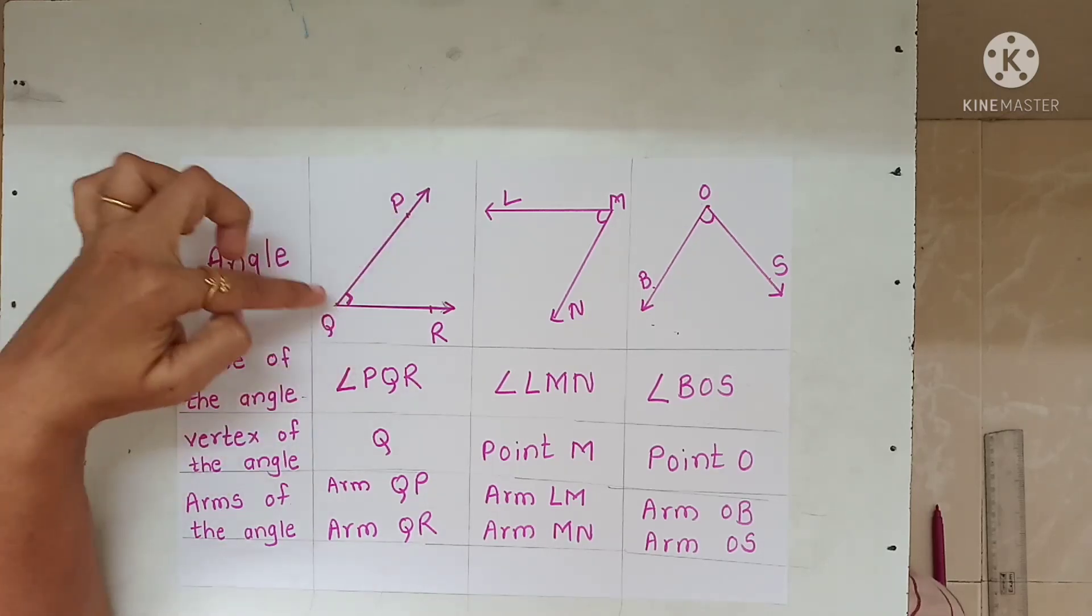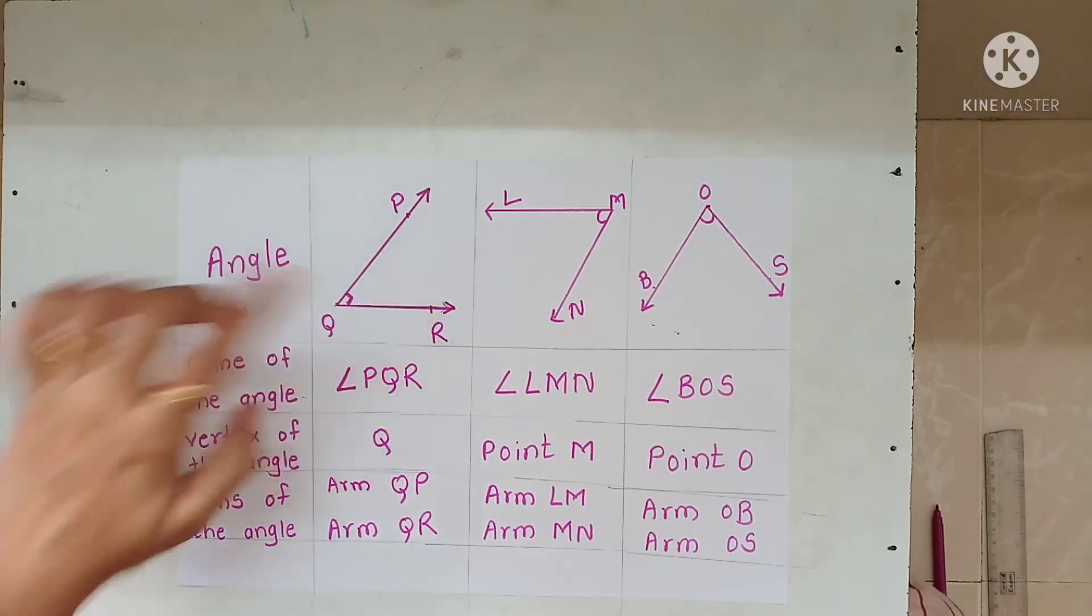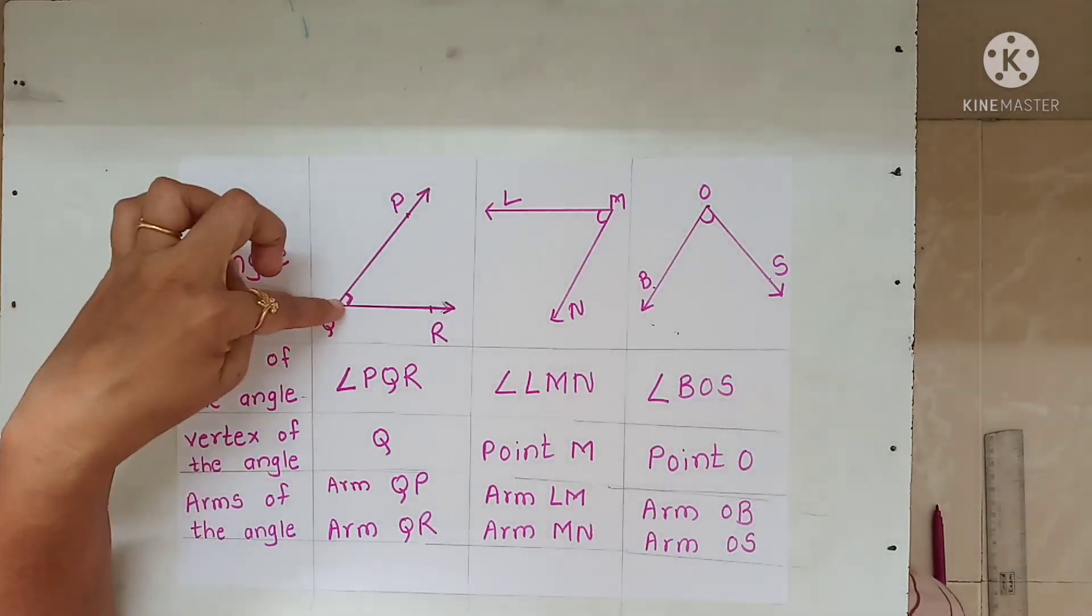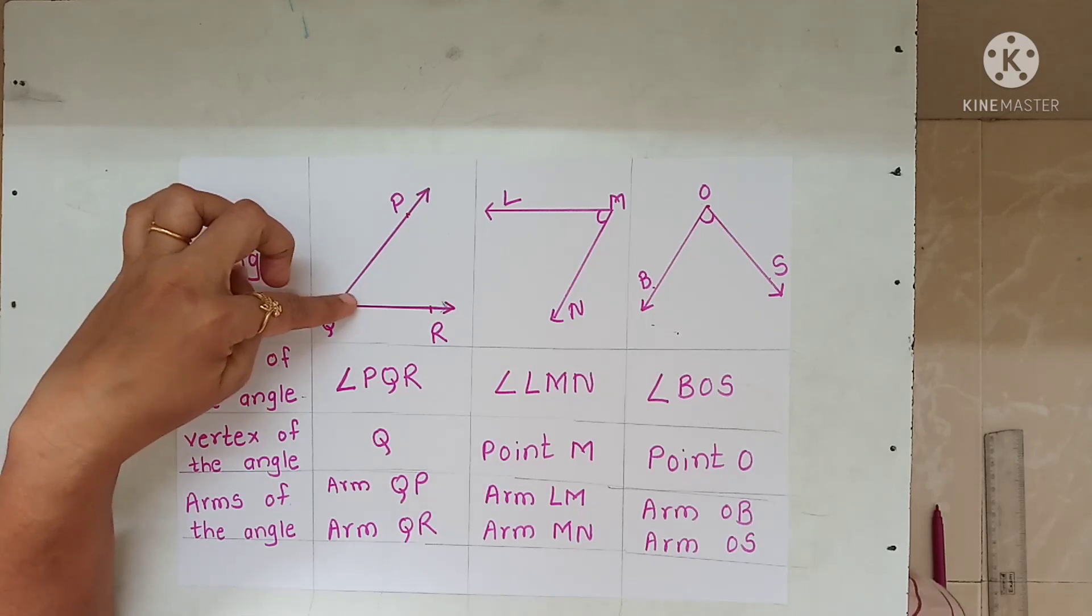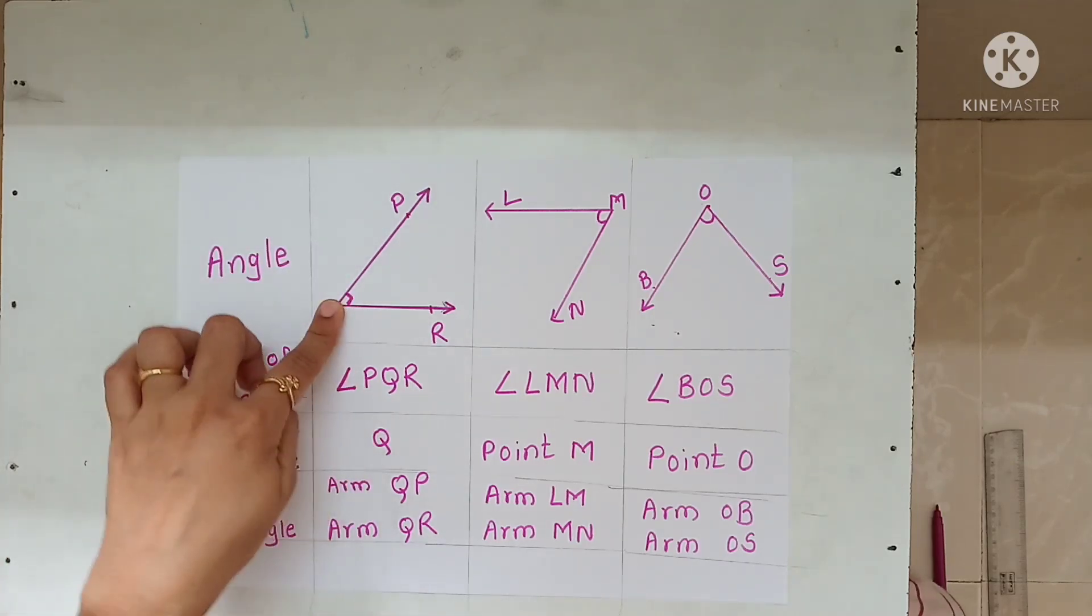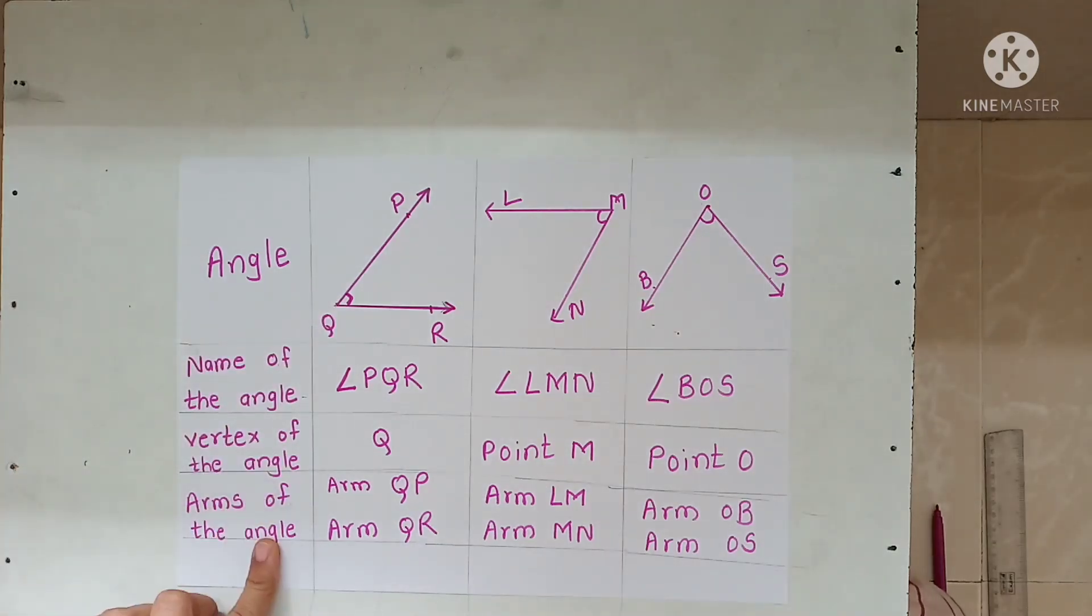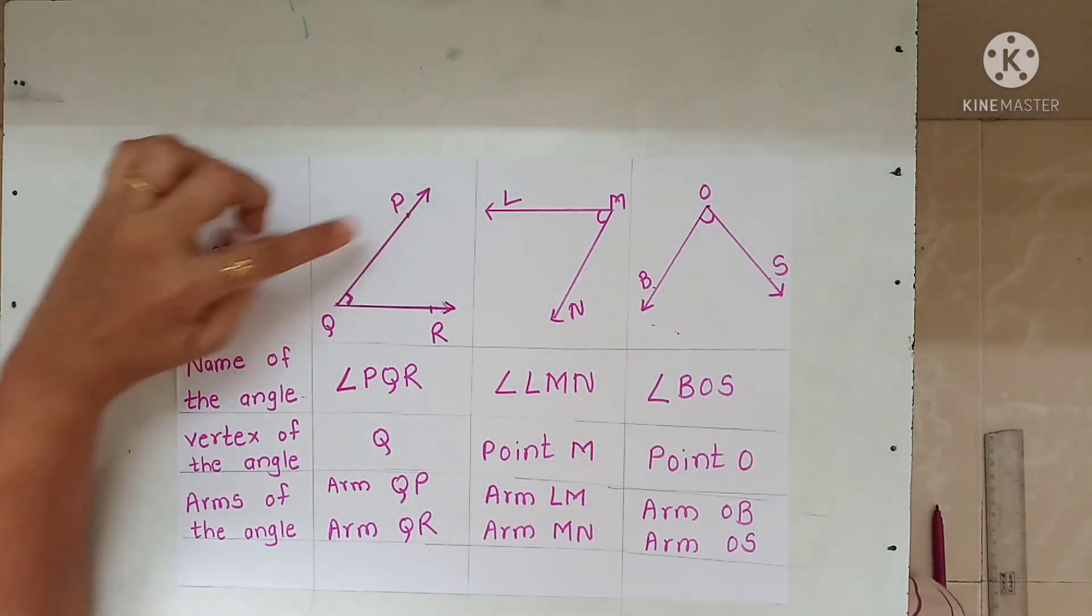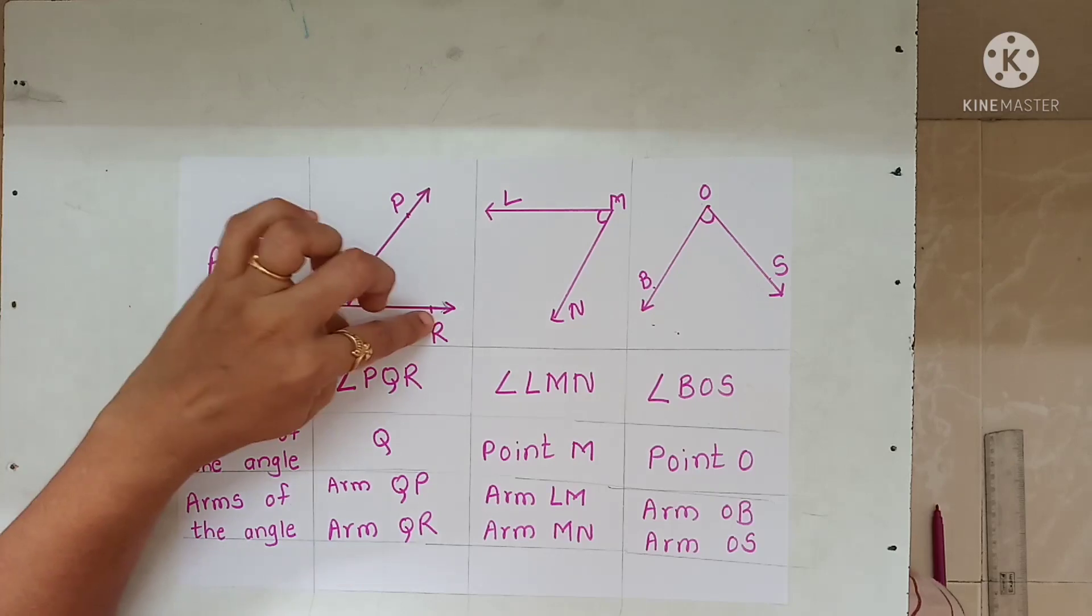So angle is P, R, Q. Now, angle PRQ. Vertex is R. Arms are PQ and QR.